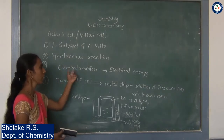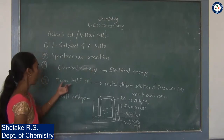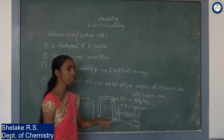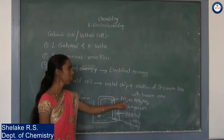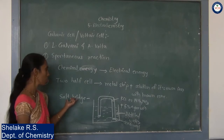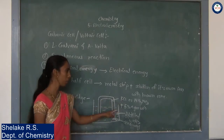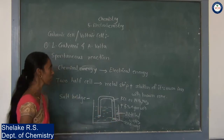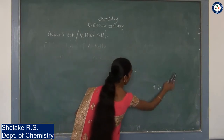So, the galvanic cell involves a spontaneous reaction where chemical energy is converted into electrical energy. The galvanic cell contains two half-cells; each half-cell is made up of a metal strip and the solution of its own ion with a known concentration. These two half-cells are connected using the salt bridge — a U-shaped glass tube with an inert electrolyte like KCl or ammonium nitrate and 5% agar solution. When not in use, it is placed in distilled water.